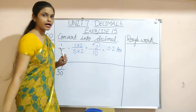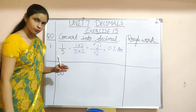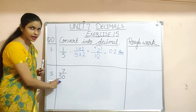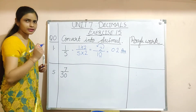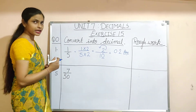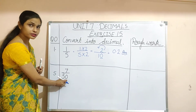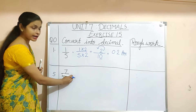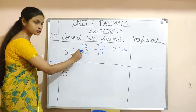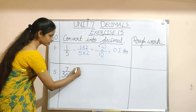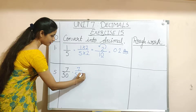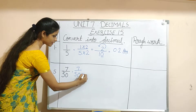Now let us do one more question here — practice it. We have 50 here. Can we make it in terms of 10, 100, or 1000 as the denominator? Yes. If we multiply 50 by 2, then we can get the denominator in terms of 100. So we can write it as 7 by 50 multiplied by 2.